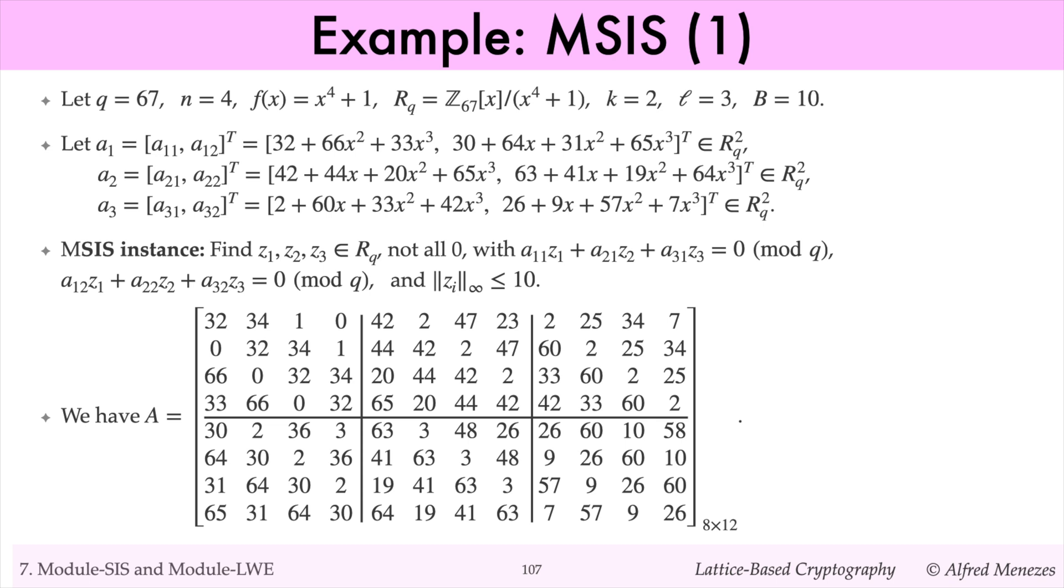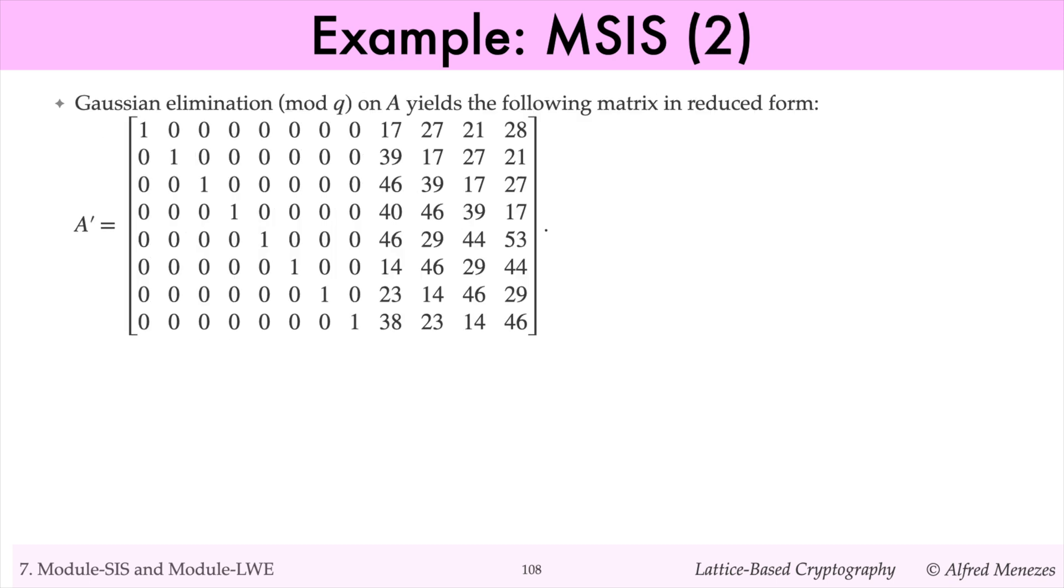The matrix A is this 8 by 12 matrix. The 4 by 4 blocks of A are the anti-circulant matrices corresponding to the polynomials in a1, a2, and a3. We need to find small nonzero vectors in the null space of A modulo q. I used Gaussian elimination on A modulo 67 to get this reduced form matrix A primed. As expected, the matrix A primed has rank 8, so the null space has dimension 4.